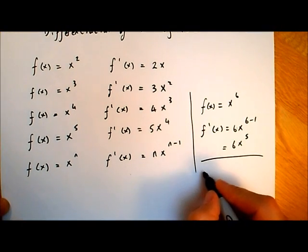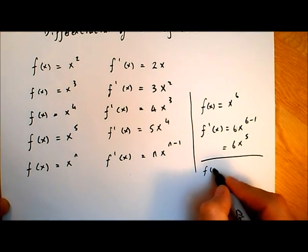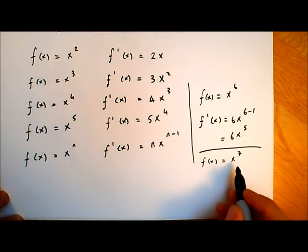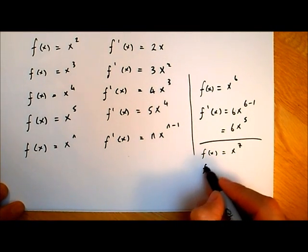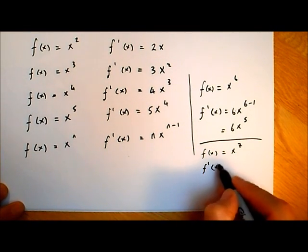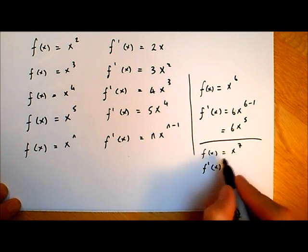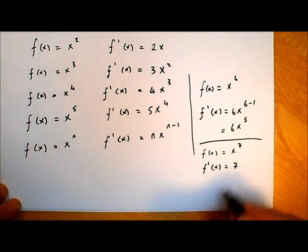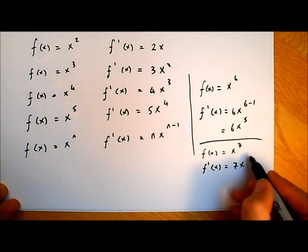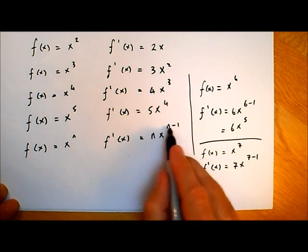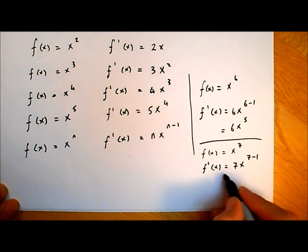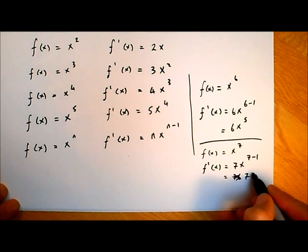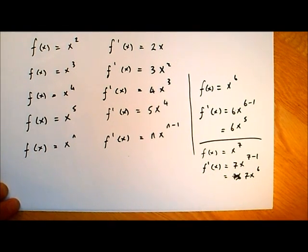Let's look at another example. If f of x is equal to x to the power of 7, this time the n value is 7. So f dash of x, the slope of that function, will be n times x — this time 7 — so it'll be 7 times x to the power of 7 minus 1, giving us 7x to the power of 6.